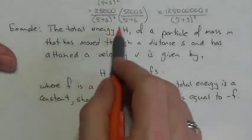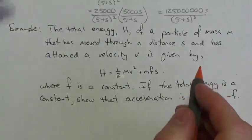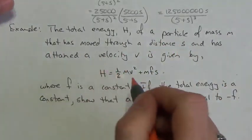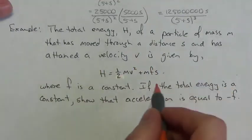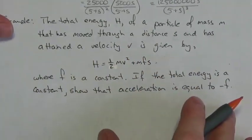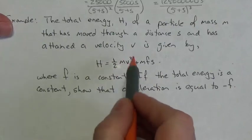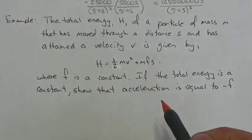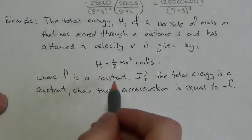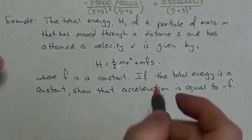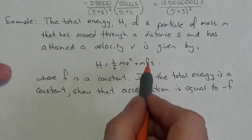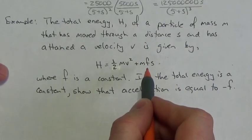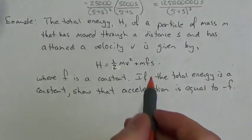One more question. The total energy H of a particle of mass m that has moved through displacement s and attained velocity v is given by H = ½mv² + mfs, where f is a constant. You should recognize ½mv² as kinetic energy and mfs as potential energy as a function of displacement.